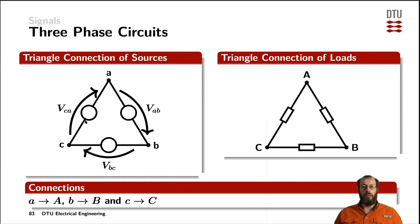The other way of connecting the three sources is in a triangle configuration. Again for the source connections, I'm using the lowercase letters A, B, and C to define three different nodes, and equivalently the uppercase letters A, uppercase letter B, and uppercase letter C for their nodes.